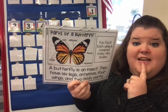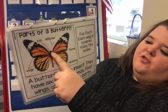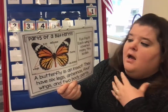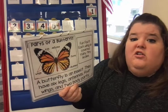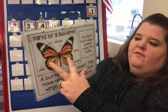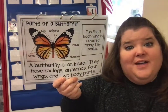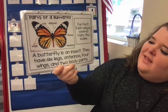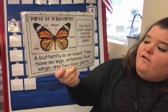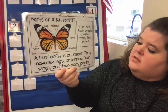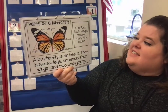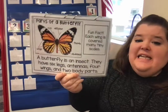They have a thorax, which is the middle part of their body — like where we have our arms. They have an abdomen, which is the lower part of their body where they go potty. And they have wings — butterflies definitely have wings; that's the biggest part. A butterfly is an insect and they have six legs, antennae, four wings, and two body parts not counting their head.